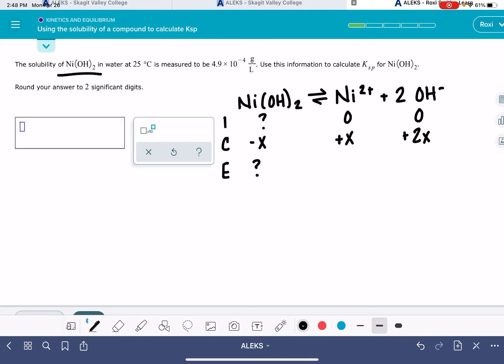And then when this is all done, we still aren't going to know how much nickel hydroxide we have. We will have X of the nickel 2 plus ion, and we will have 2X of the hydroxide ion.